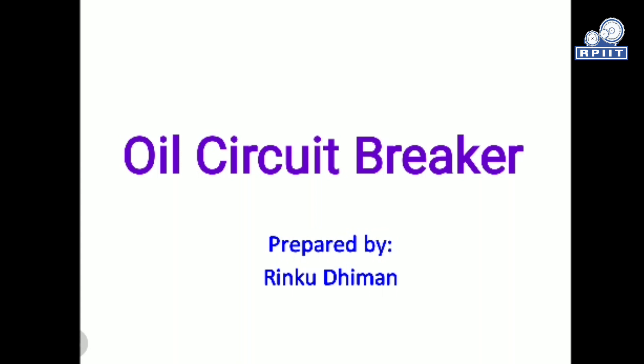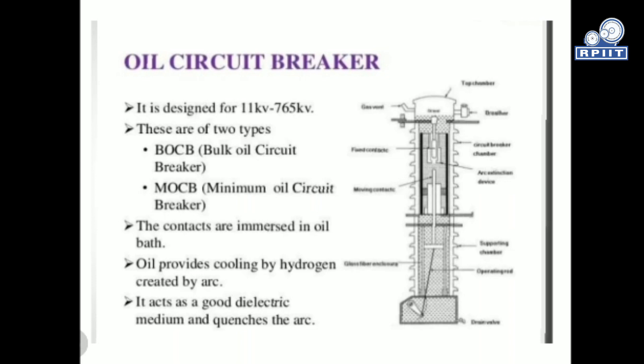We will discuss the oil circuit breaker quenching medium, its properties, advantages, and disadvantages in the further slides. Oil circuit breakers are basically designed for a voltage range of 11 kV to 765 kV. These are of two types: BOCB, that is the bulk oil circuit breaker, and MOCB, that is the minimum oil circuit breaker.